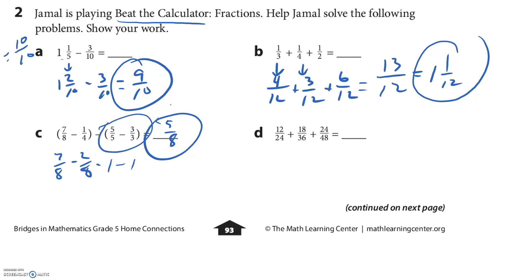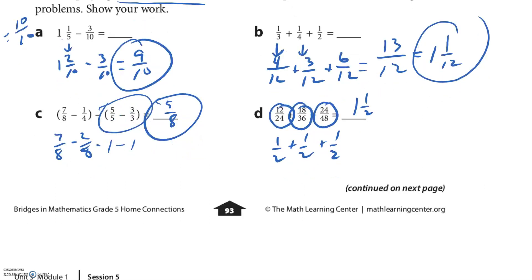Last one. So I could try and make these all match the same denominator, make it bigger. But check out this. This is a half. This is a half. And this is a half. I think the answer is one and one-half.